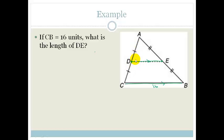So again, we've got D as the midpoint of this, E is the midpoint of this. We've got the midline, and this line is parallel to this. And CB is double the length of DE. So if CB is 16 units, DE is 8 units. And that is the answer to that. Nice and easy.